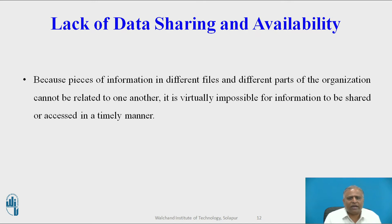Next is lack of data sharing and availability. Because pieces of information are in different files, different parts of the organization cannot be related to one another. It is virtually impossible for information to be shared and accessed in a timely manner. Information cannot flow freely across different functional areas or parts of the organization. If users find different values of the same piece of information in two different systems, they may not use those systems because they cannot trust the accuracy of the data.